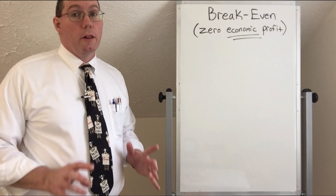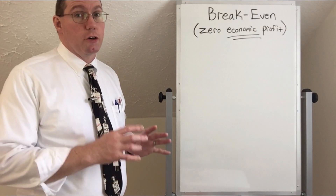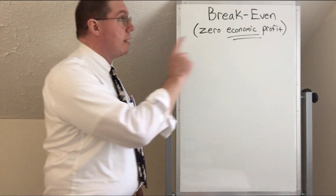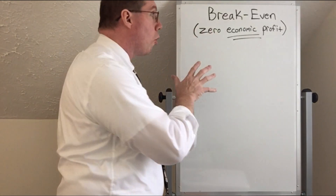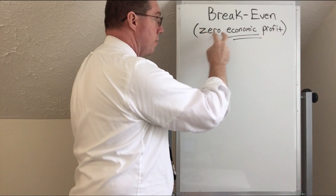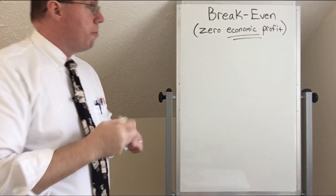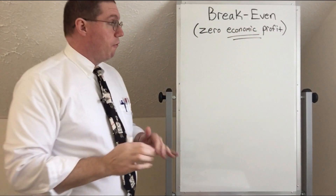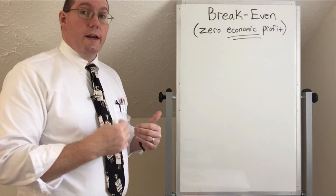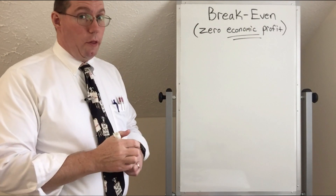Now we're going to see what it looks like on a market structure graph when a company is breaking even, or what we're going to call it, when they're earning zero economic profit. So before we look at the graph, we want to know what it is that we're looking at on the graph.